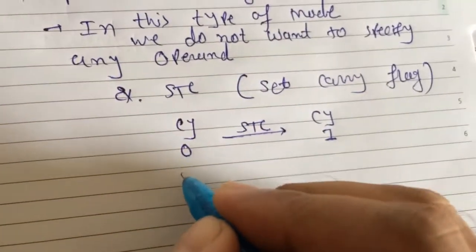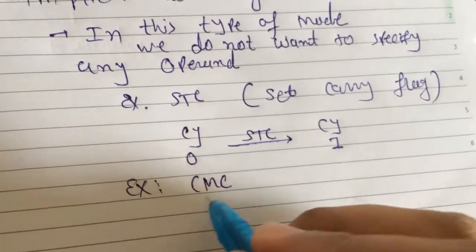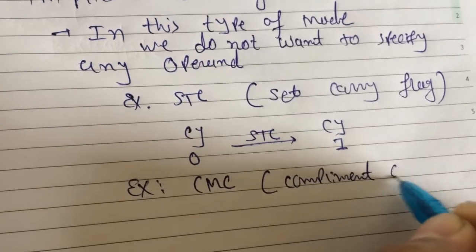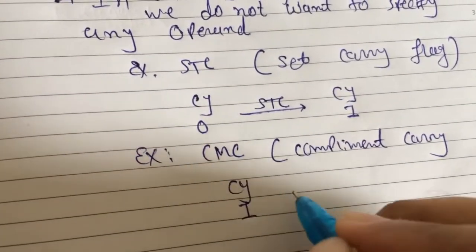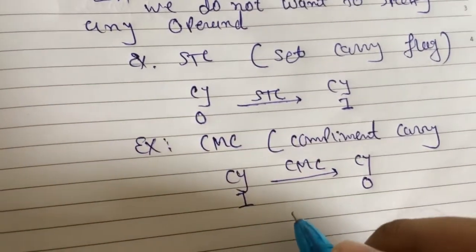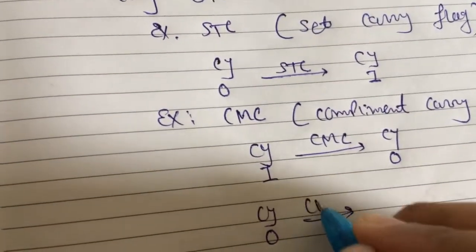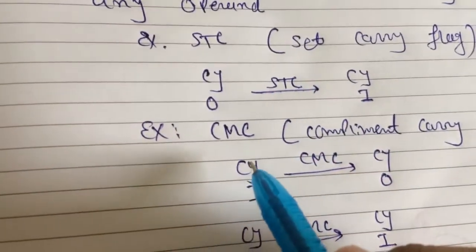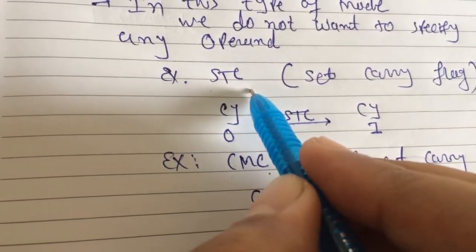The second example is CMC, which means Complement Carry. If carry equals 1 and we write CMC, then carry becomes 0. If carry equals 0 and we write CMC, then carry becomes 1. In CMC, no operand is specified. In STC, no operand is specified either.